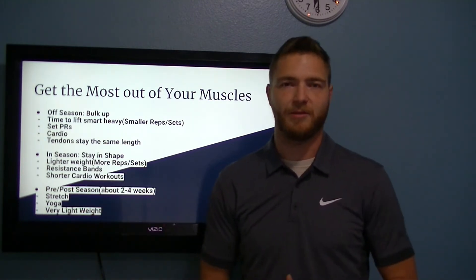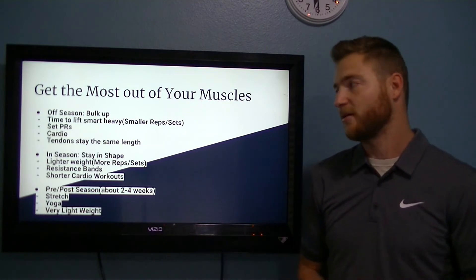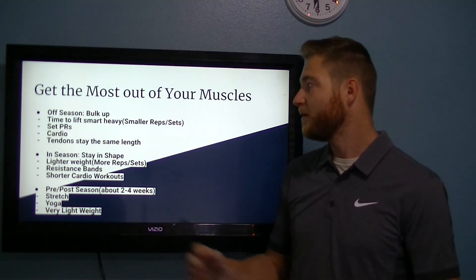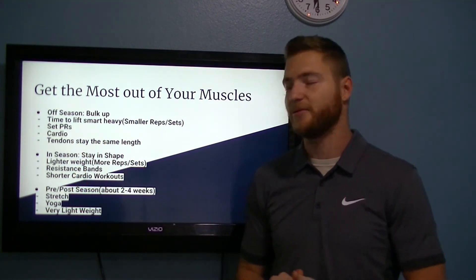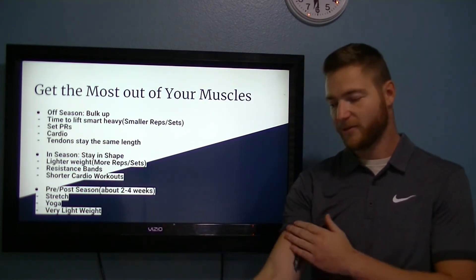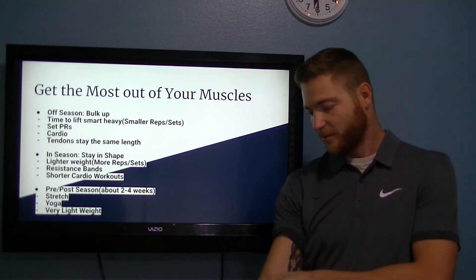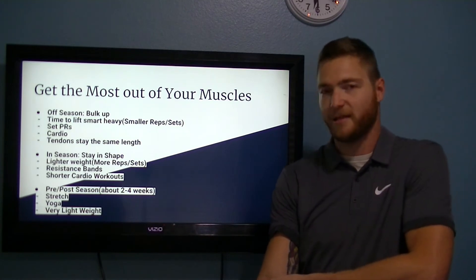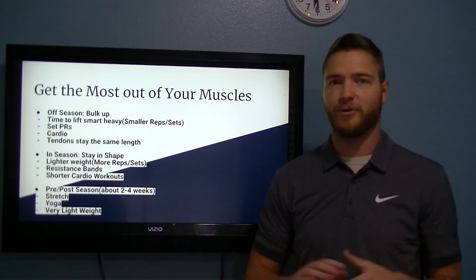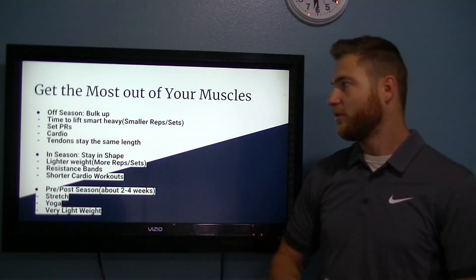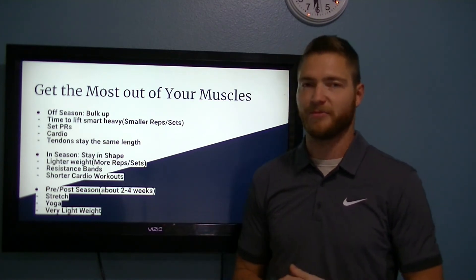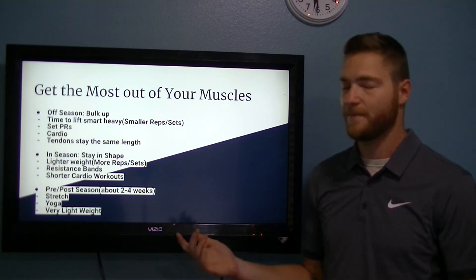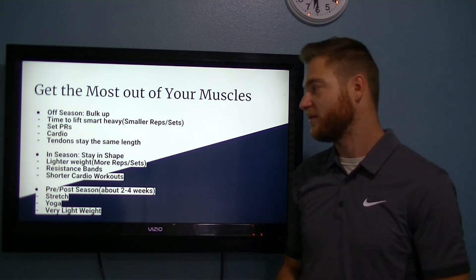Cardio is a big thing to do in the off-season — longer runs, because your heart is also a muscle and you've got to keep building it. Tendons always stay the same length, so that's why I do bulking in the off-season. If you're trying to get your biceps bigger, your bicep tendon stays the same length, so as your muscle grows, the tendon has to cover more ground. If you try to bulk up during the season and do that three days before your event, that's how you get tears, because your body isn't used to it or hasn't recovered enough.